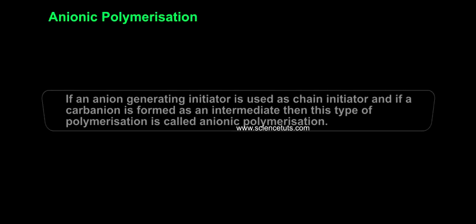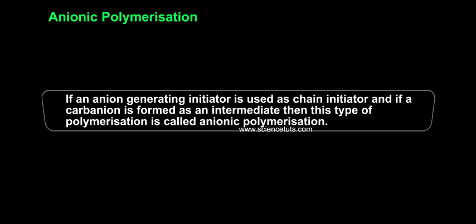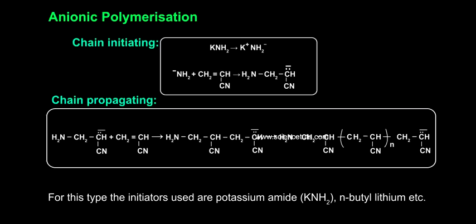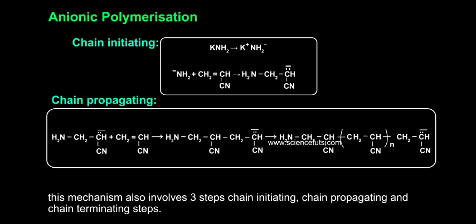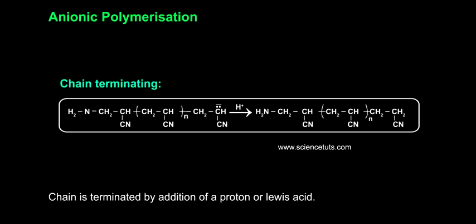Anionic polymerization: If an anion generating initiator is used as a chain initiator and a carbanion is formed as an intermediate, then this type is called anionic polymerization. The initiators used are potassium amide (KNH₂), n-butyl lithium, etc. This mechanism also involves three steps: chain initiating, chain propagating, and chain terminating. The chain is terminated by addition of a proton or Lewis acid.